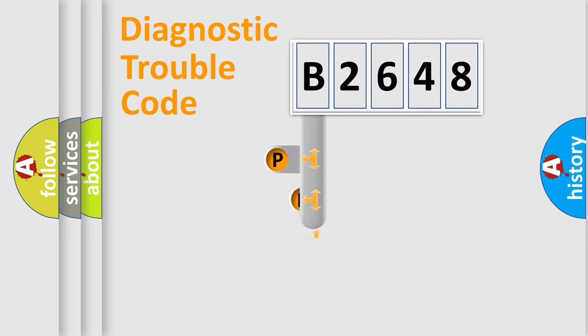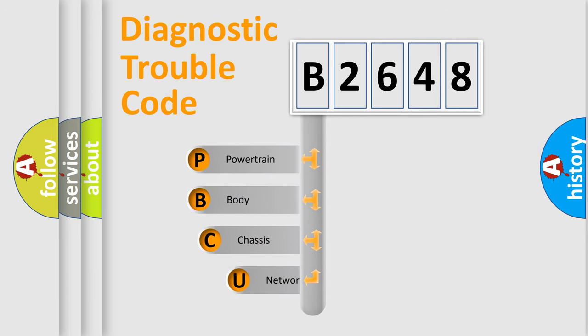First, let's look at the history of diagnostic fault code composition according to the OBD2 protocol, which is unified for all automakers since 2000. We divide the electric system of automobile into four basic units.